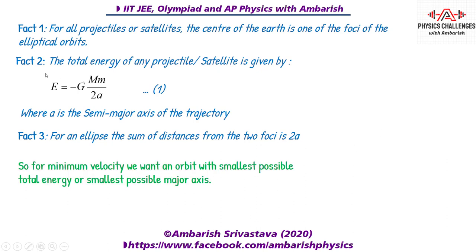Now look at this expression carefully. Total energy is −GMm / 2a, so smaller the value of a, lesser is the value of E — note this is a negative expression. We want the minimum possible value of the major axis so that total energy is minimized. From the surface of Earth, the potential energy is fixed, and we want to minimize kinetic energy. Minimizing velocity means minimizing kinetic energy, which means we want a minimum value of a. So for minimum velocity, we want an orbit with the smallest possible semi-major axis.